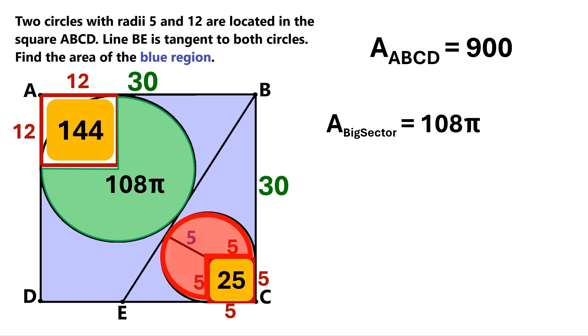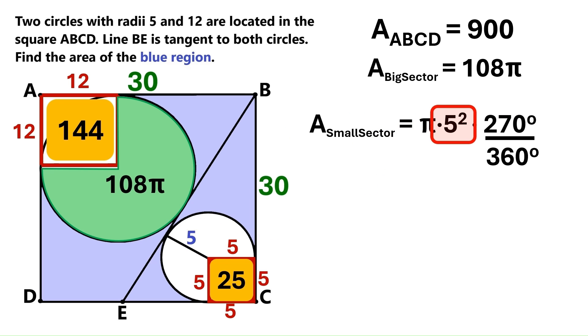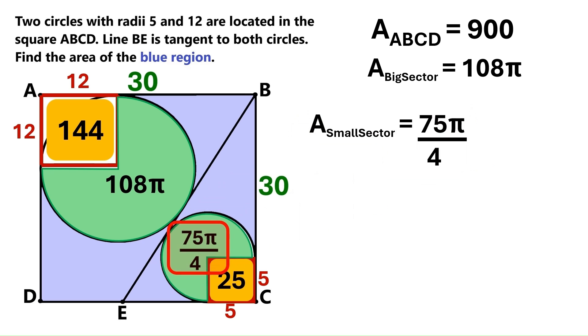We also need to find the area of this small circle sector down here. And this one also has a 270 degree angle. And we'll use the same formula. The radius is 5. So let's put that into our formula. We do the math. And the area is 75 pi over 4.